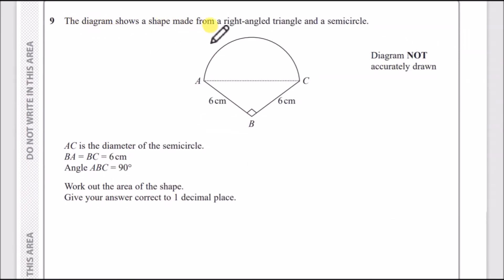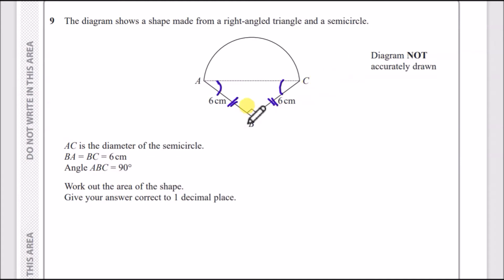Question 9: a shape made from a right-angle triangle and a semicircle. The two sides are equal, making it an isosceles triangle. With a 90° angle, the remaining two angles must add to 90°, and since they're equal, they must both be 45°. So 45 + 45 + 90 = 180°.